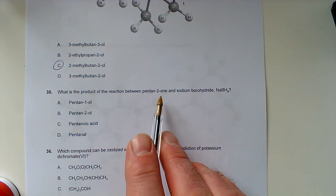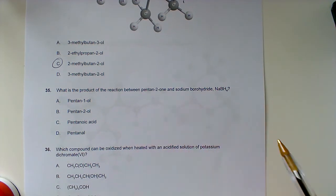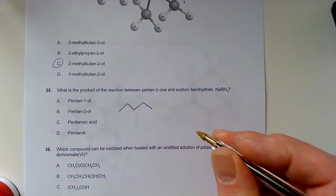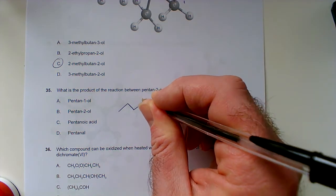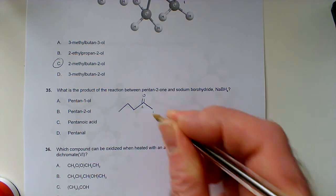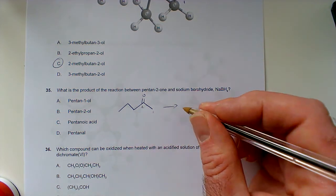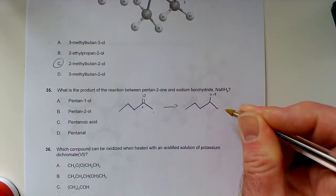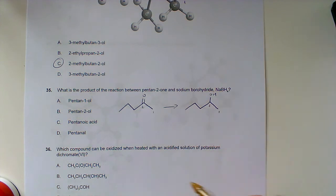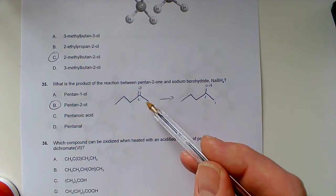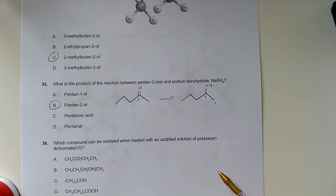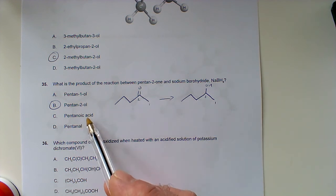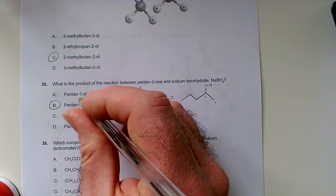What is the product of the reaction between pentan-2-one and sodium borohydride NaBH4? Let me sketch pentane, 1, 2, 3, 4, 5. Let's convert that into pentan-2-one by putting our ketone onto position 2. When we reduce that with sodium borohydride, that reduces ketones and aldehydes to alcohols, so it's pentan-2-ol. These are oxidation products using dichromate and H+ instead.